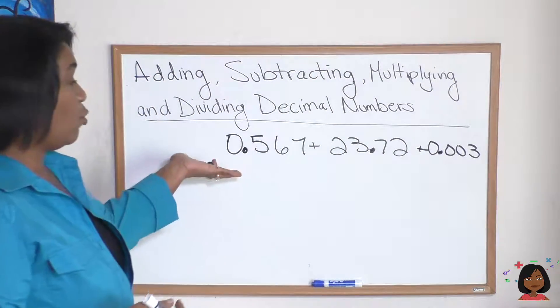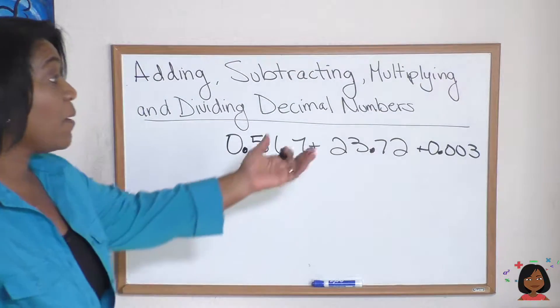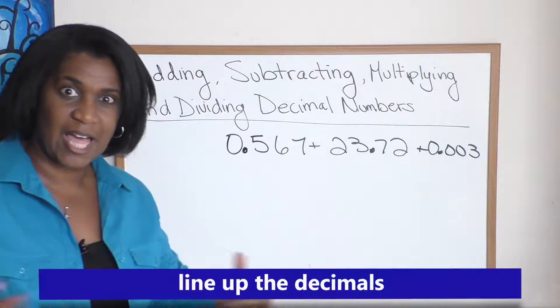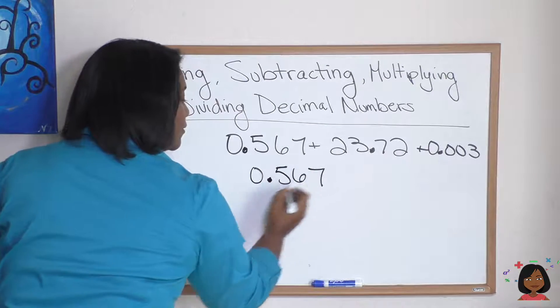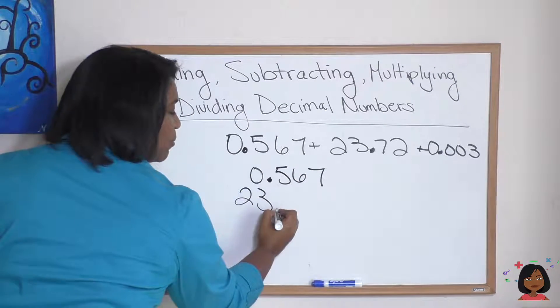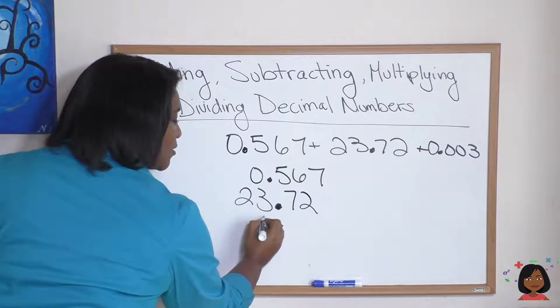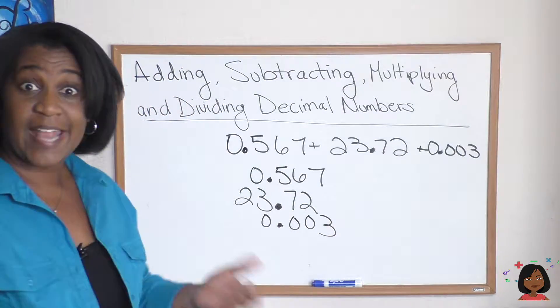Take a look at this example: 0.567 plus 23.72 plus 0.003. Again, the rule: line up your decimal. So let's do it. 0.567, here's my 23 because my decimal goes right there, and here's my decimal here, so everything fills in around the decimal.